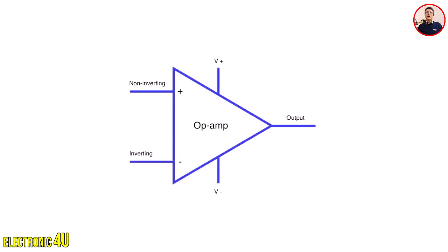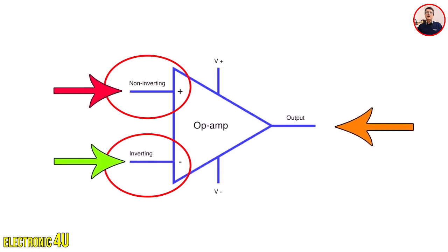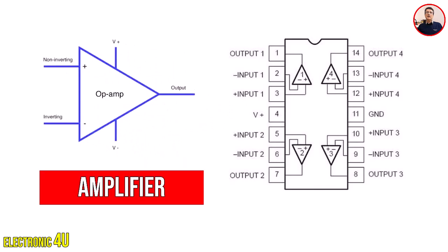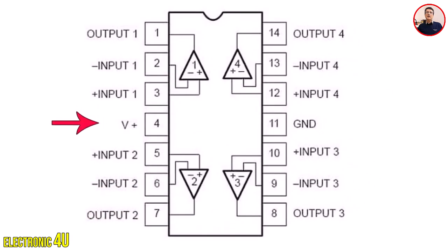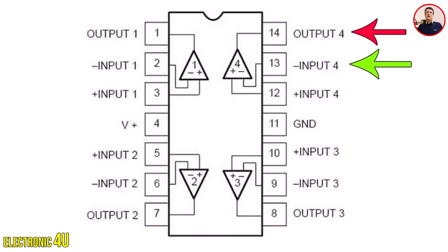The basic function of an op-amp IC is that it calculates the voltage difference between the inverting and non-inverting inputs, and based on that, activates or deactivates the output — as if it's comparing these two inputs and showing the result at the output. In this IC, pin number 4 is the VCC pin used to power the IC, pin number 11 is the ground pin, pin number 14 is the op-amp output, pin number 13 is the inverting input, and pin number 12 is the non-inverting input.